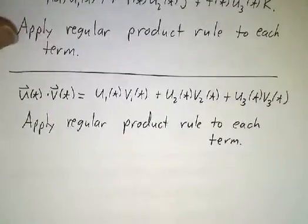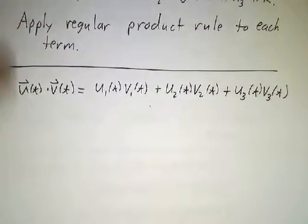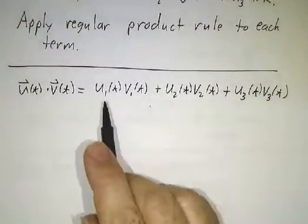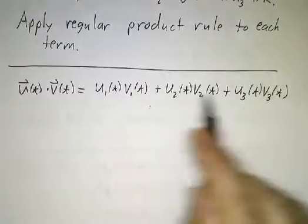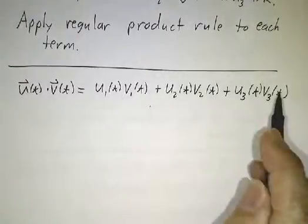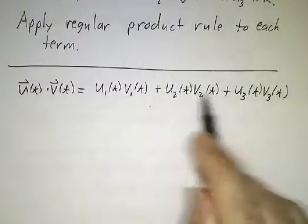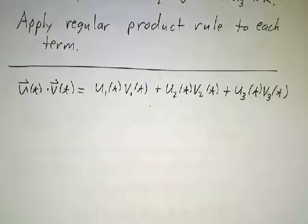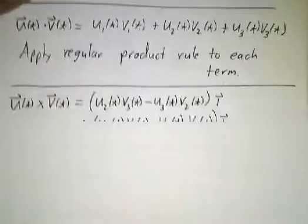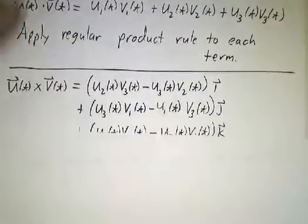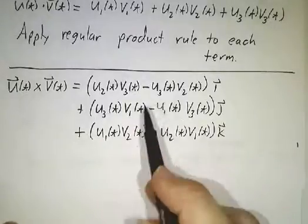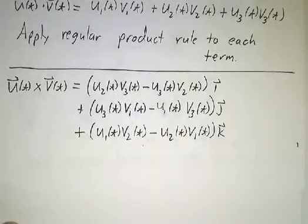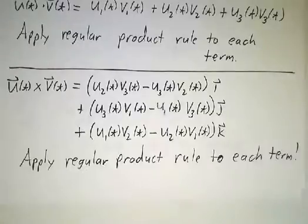For the dot product, it's just a sum of scalar products, so you apply the regular product rule to each of those, collect terms, and you're done. For the cross product, you have six terms, but you can apply the regular product rule to each of them, and you're done.